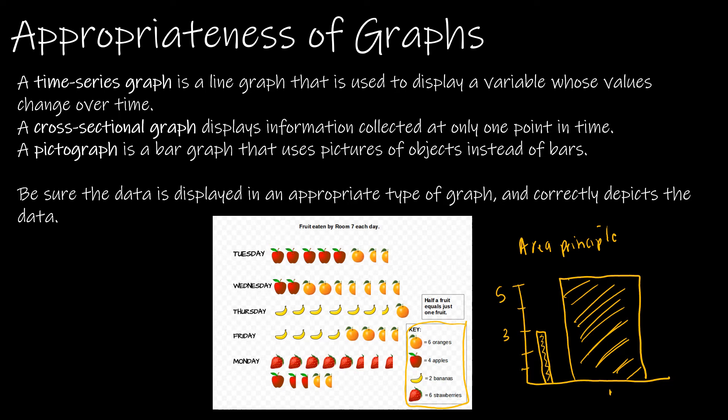But again, this is another application of the area principle because each picture represents a different number of each type of fruit. And this one's kind of funny. Half of a fruit just equals one fruit. So even though an orange is six oranges, this half of an orange isn't three oranges, it's just one. So again, things are violated all over the place in this case.